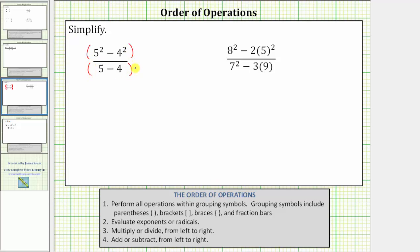This means to simplify an expression in fraction form, we always simplify the numerator and denominator separately using the order of operations, and then in the last step, we simplify the fraction.